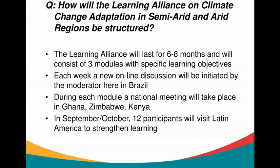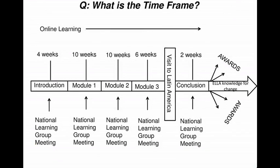The Alliance will last between 6 and 8 months and will broadly follow the published curriculum, which you can find on the website. For most participants, the interaction will take place online. During each module, a national learning meeting will take place in Ghana, Zimbabwe, and Kenya. The outcomes of the national learning groups will feed into the online discussions.